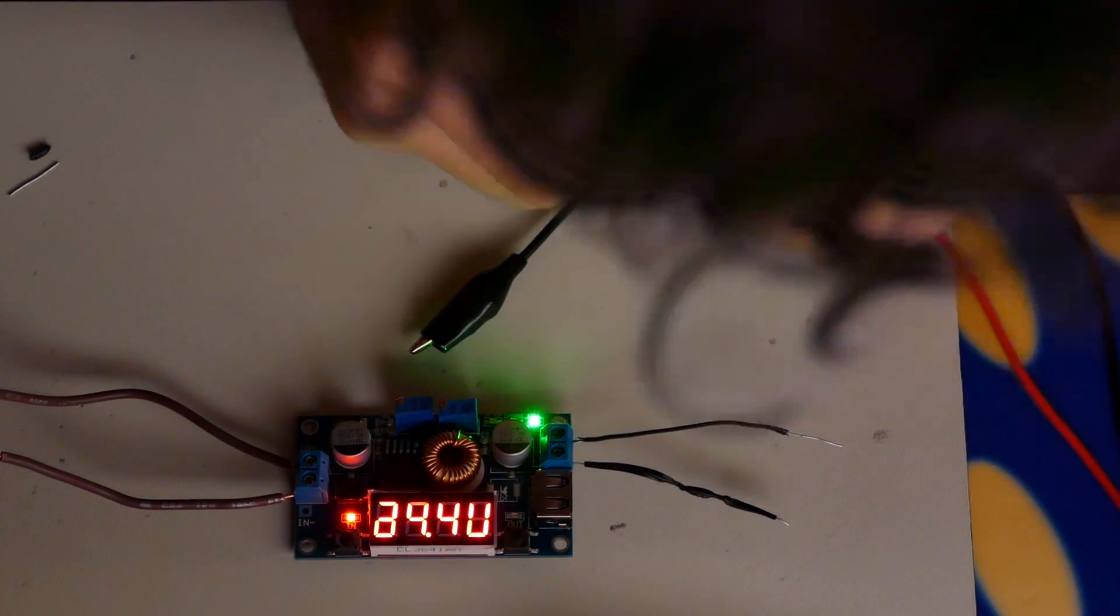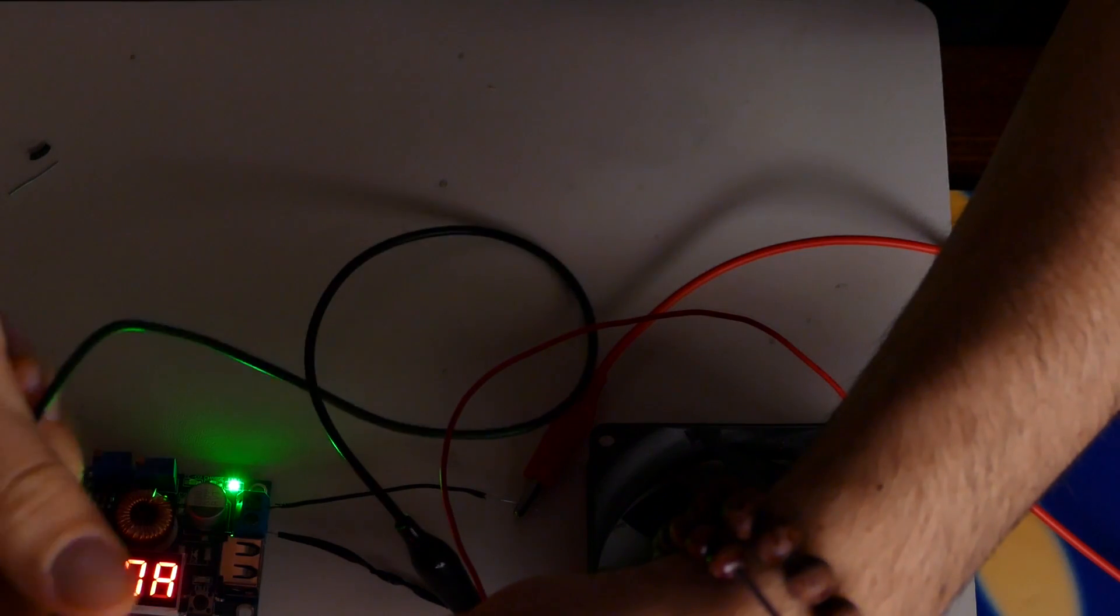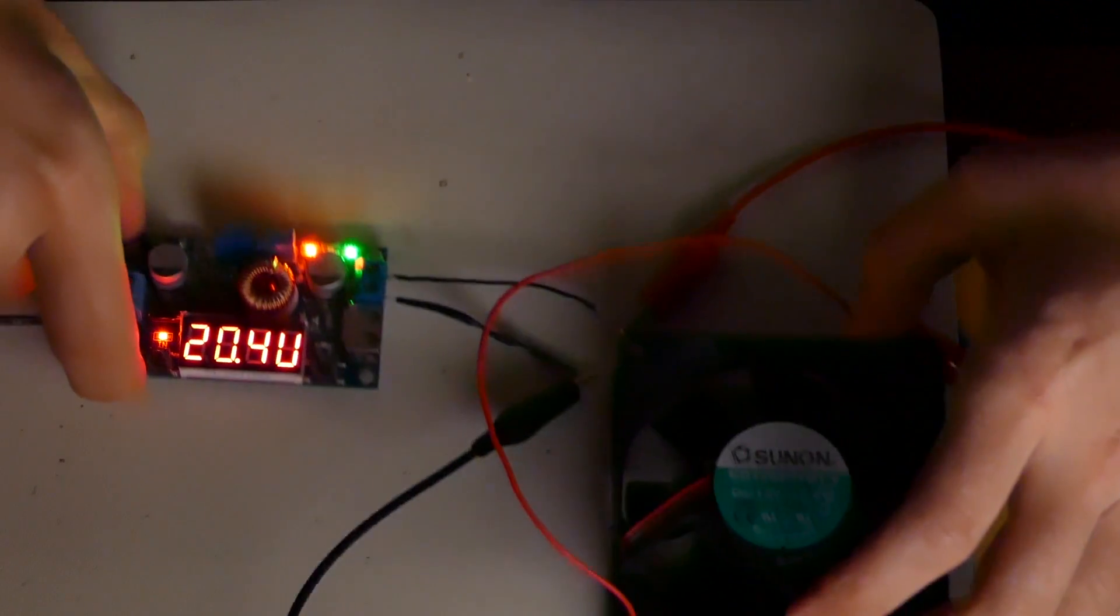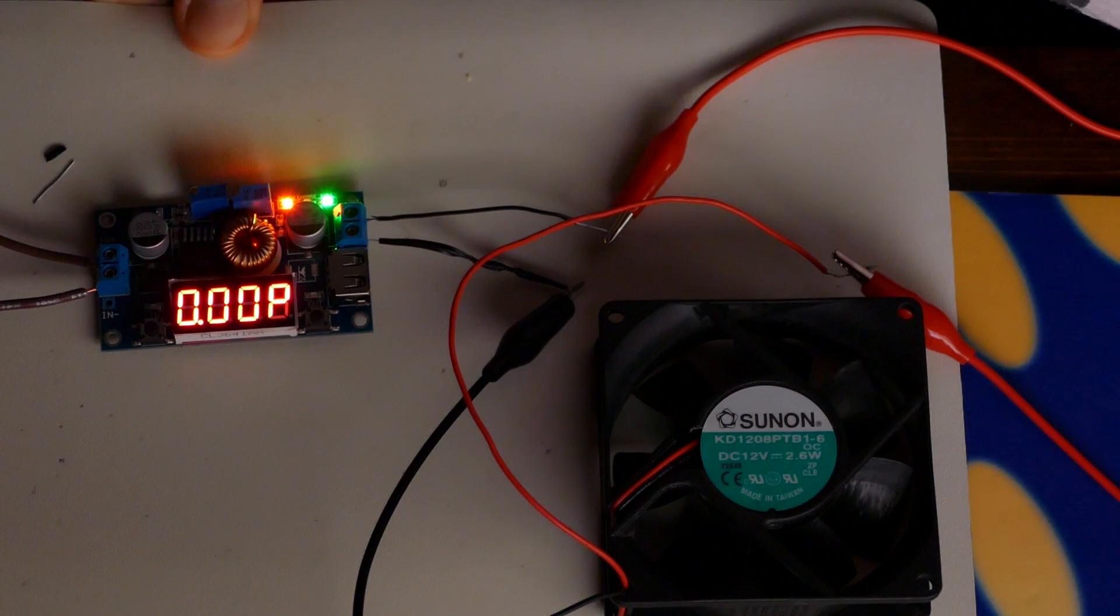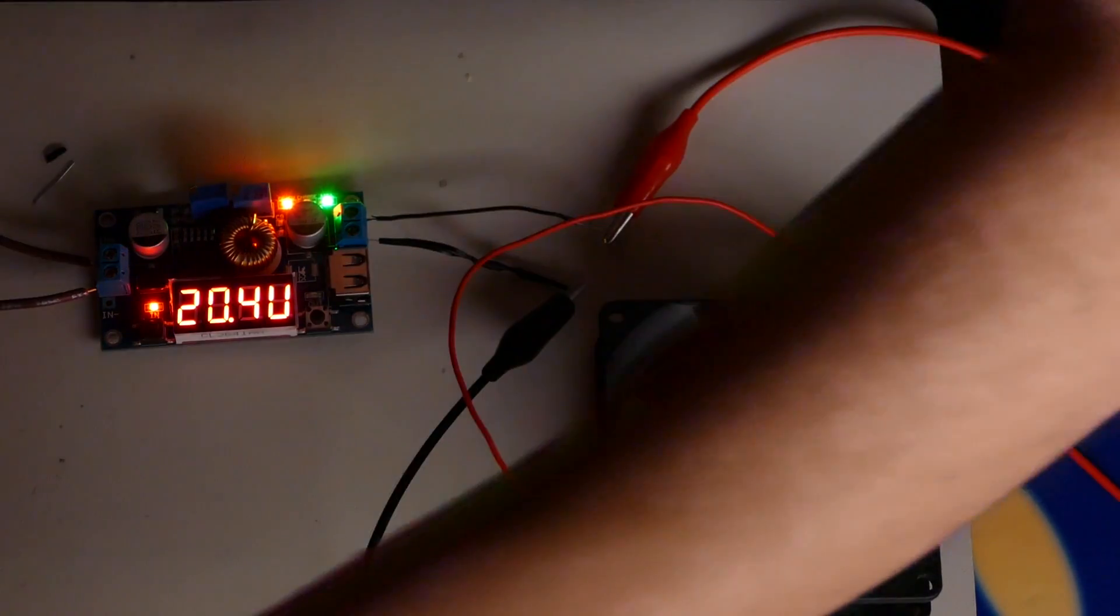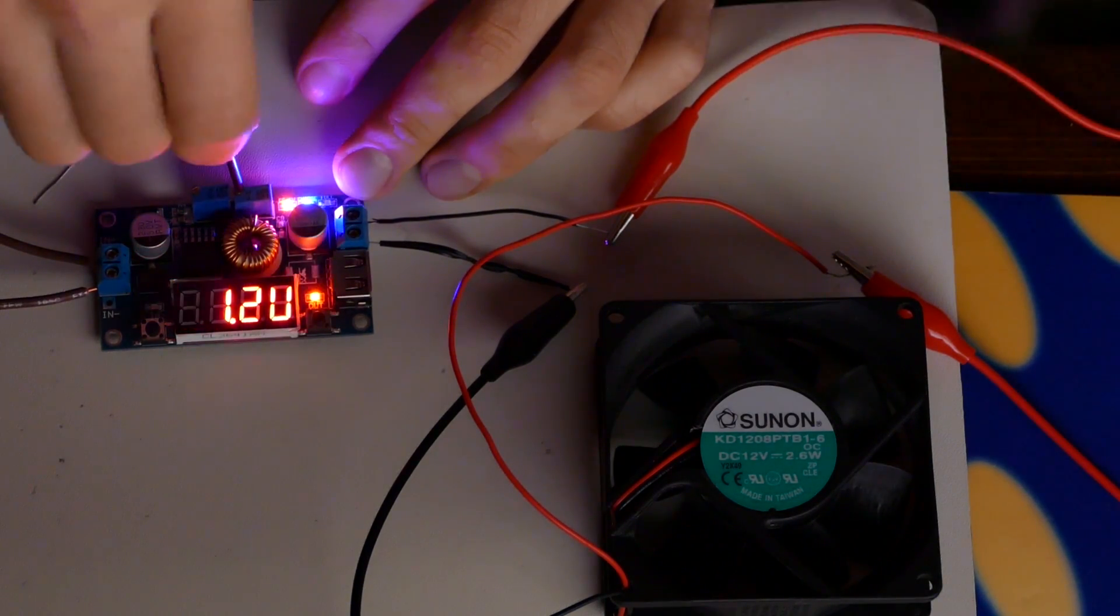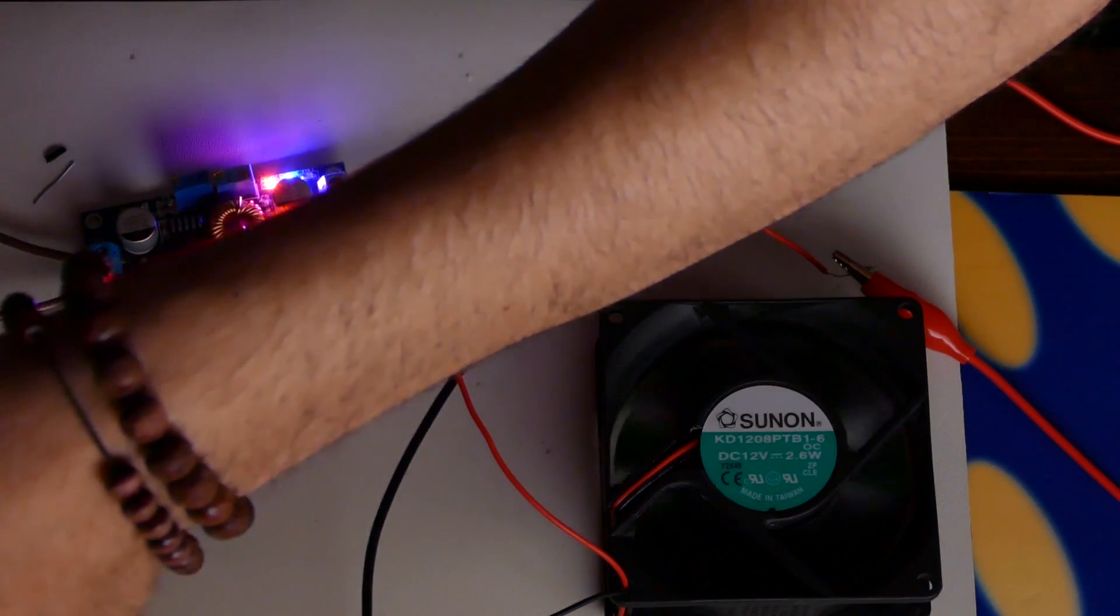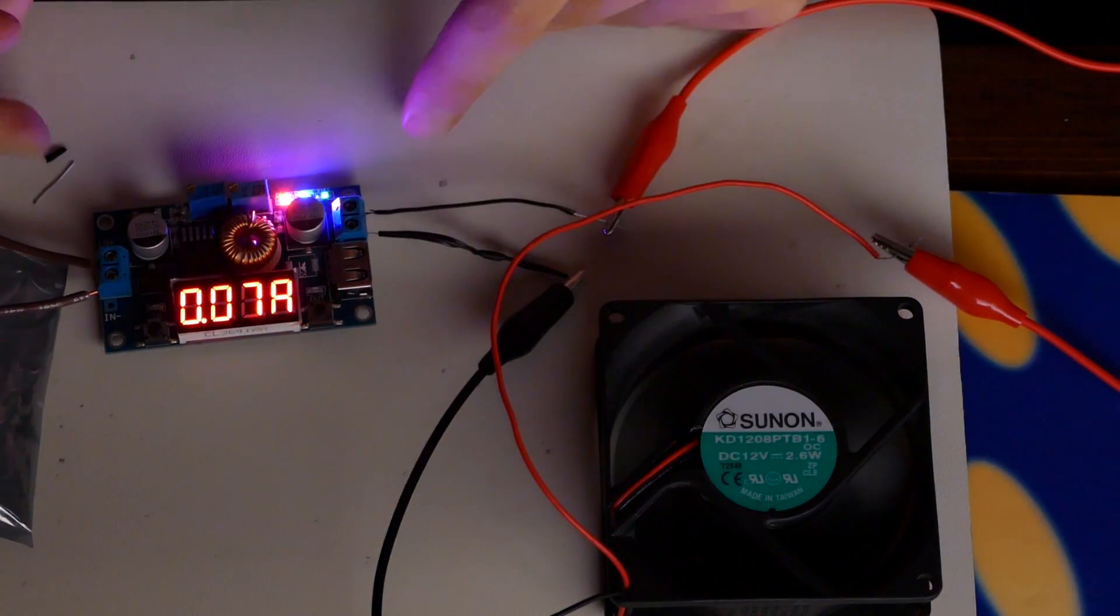So let's get the alligator clips and we're going to go positive to positive and negative to negative. We have 20 volts in, but only 1 volt out, that's weird. Maybe the current potentiometer is limited here, so let's start turning that. Oh there we go, something's happening. Just keep these wires away from each other. Oh, there we go.